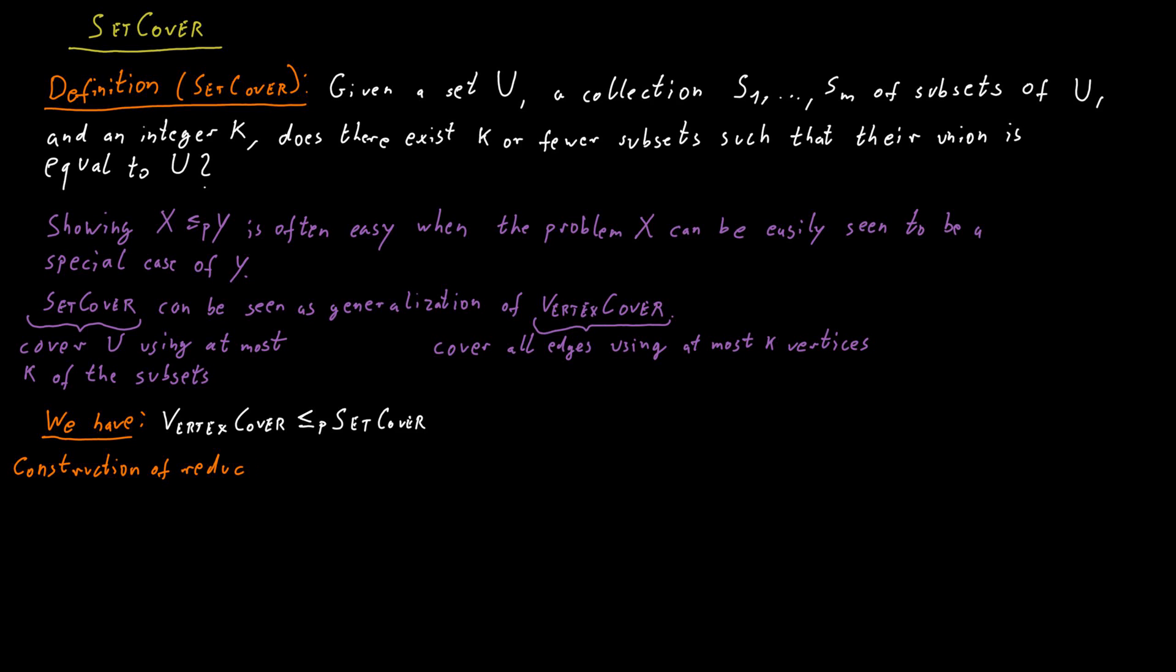Here's how this reduction works. In Vertex Cover, we are given a graph and a number k as an input. We now have to transform this into an input for Set Cover. In our construction, for our universe in the Set Cover instance, we use the set of the edges of the graph G. Now, we create, for each vertex in the graph, a subset of this universe. So for a vertex V, we would create a subset SV that consists of all the edges that are incident to the vertex V.